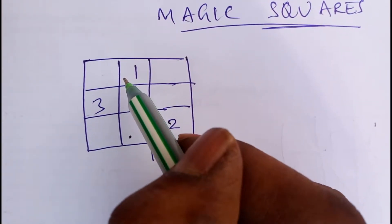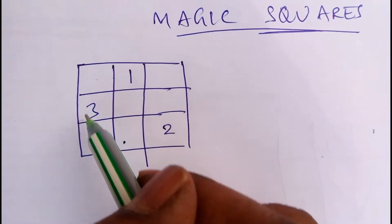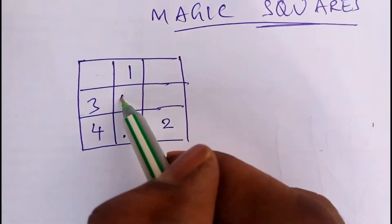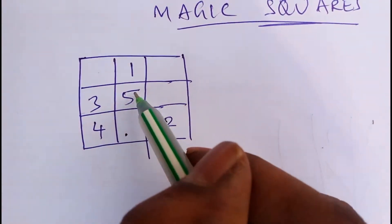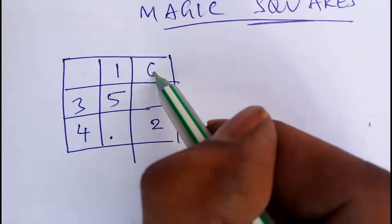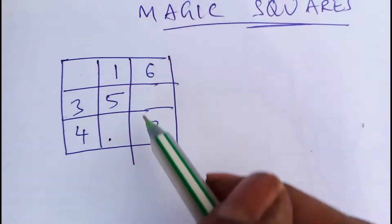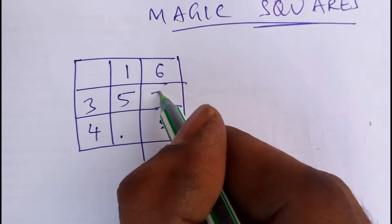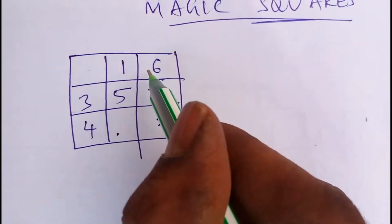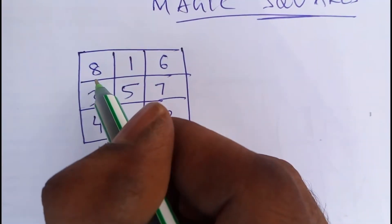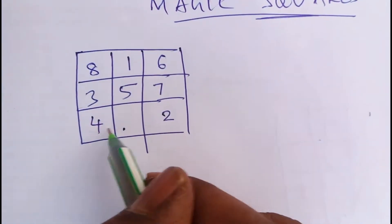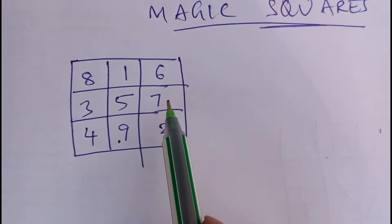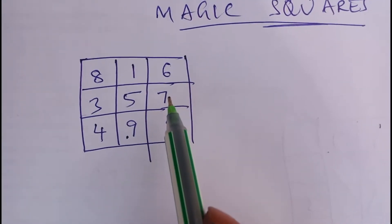When the next position going up and right is already occupied, come down one cell instead - that is rule number two. So number four goes down, number five goes up and right, number six: up and right is already occupied so come down, number seven goes up and right, number eight goes up and right, number nine goes up and right. So all nine boxes will be filled.